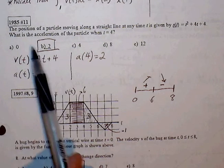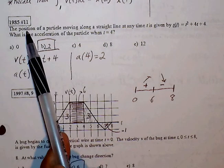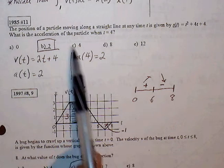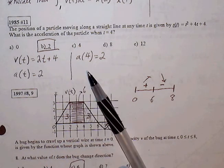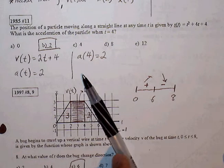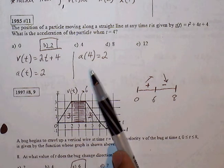Next one here. This is 1985 number 11. The position of a particle moving along a straight line at any given time is given by a position function s of t. What's the acceleration of the particle when t equals 4?